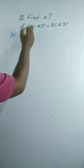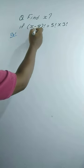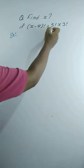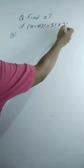Find x if (x minus 4) factorial equals 5 factorial times 3 factorial.